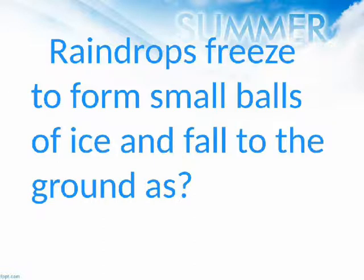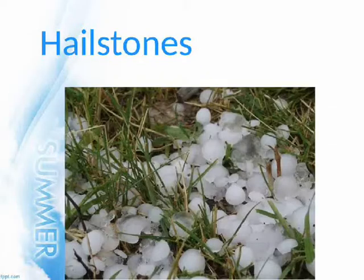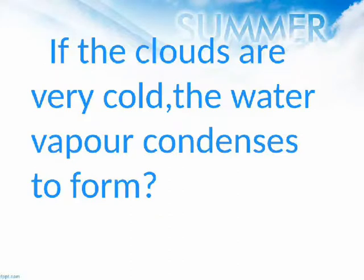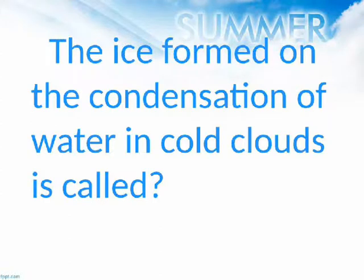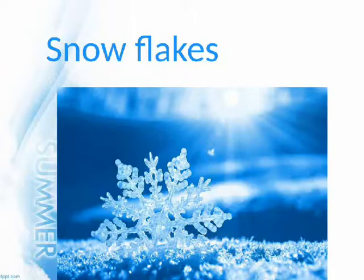Raindrops freeze to form small balls of ice and fall to the ground as? Hailstones. If the clouds are very cold, the water vapor condenses to form? Ice. The ice formed on the condensation of water in cold clouds is called? Snowflakes.